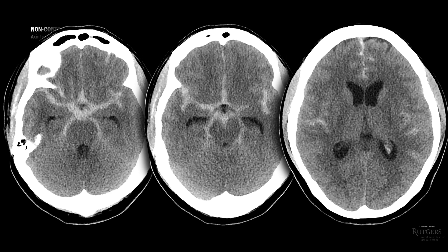Naturally, you do what any neurologist would do after hearing 'worst headache of life' with emesis. You get a non-contrast head CT. And here it is. There is extensive hyperdensity in the sylvian fissures, interpeduncular cisterns, and interhemispheric fissure. These hyperdensities are within the subarachnoid space. So, this is diffuse subarachnoid hemorrhage.